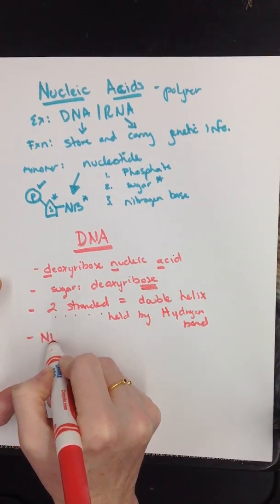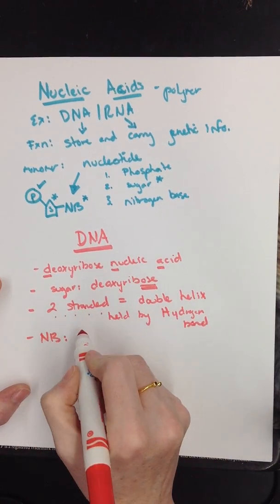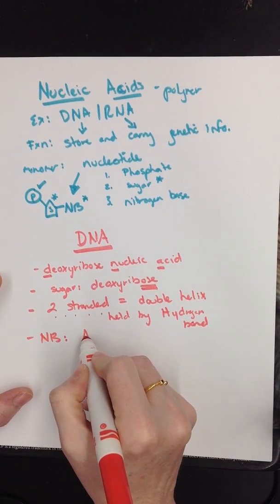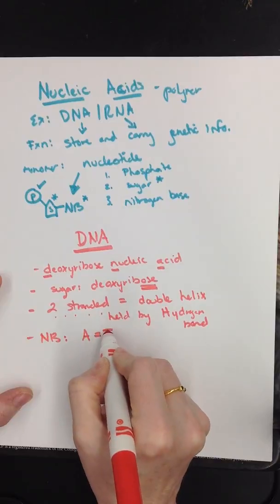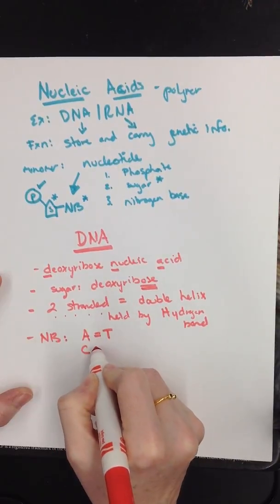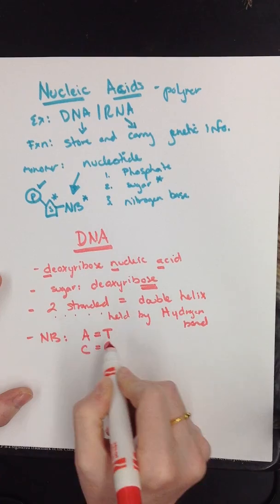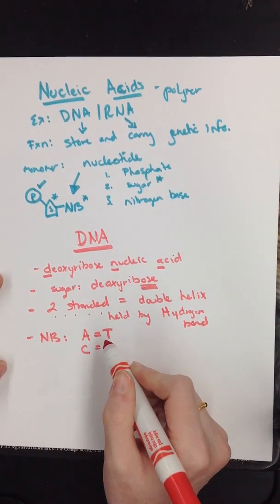Let's talk about the nitrogen bases. Nitrogen bases, they have four of them, and they go in pairs. Remember, A's always pair with T's, and C's always pair with G's. That's the nitrogen bases is how they always go together.